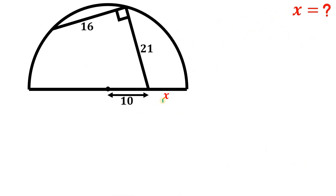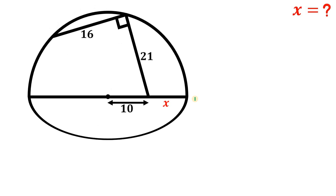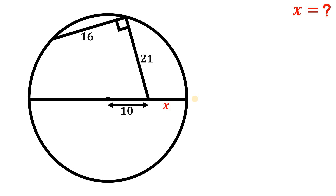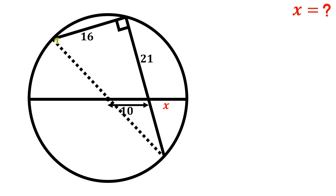Alright, so given this figure the goal is to find the length of segment x. To answer this kind of question, what we're going to do is to complete this semicircle to create a whole circle, and now expand this segment that measures 21 units. Notice that this is a right angle, so if we draw the third side to create a triangle, we created a right triangle, therefore this hypotenuse is simply the diameter of this circle.